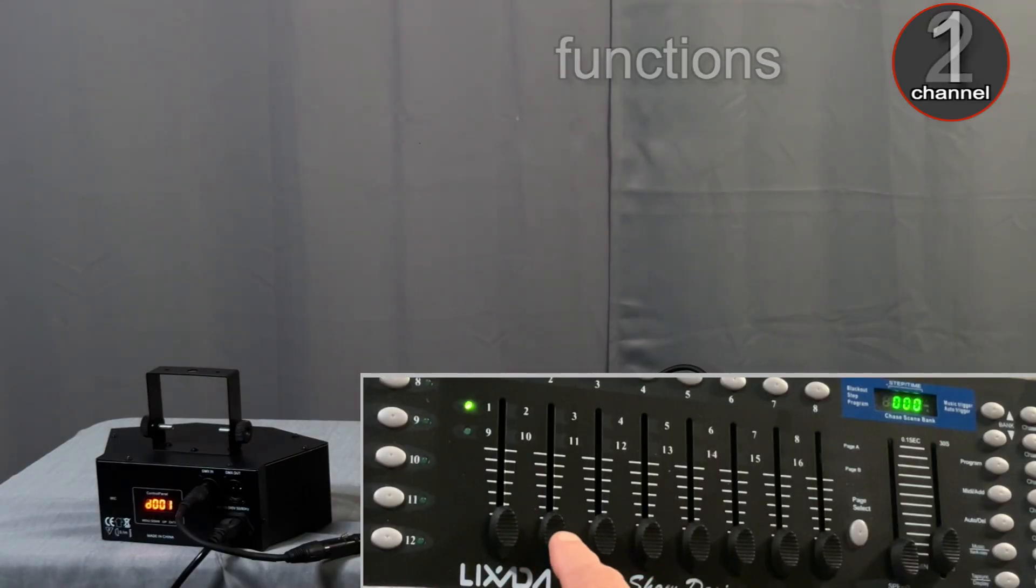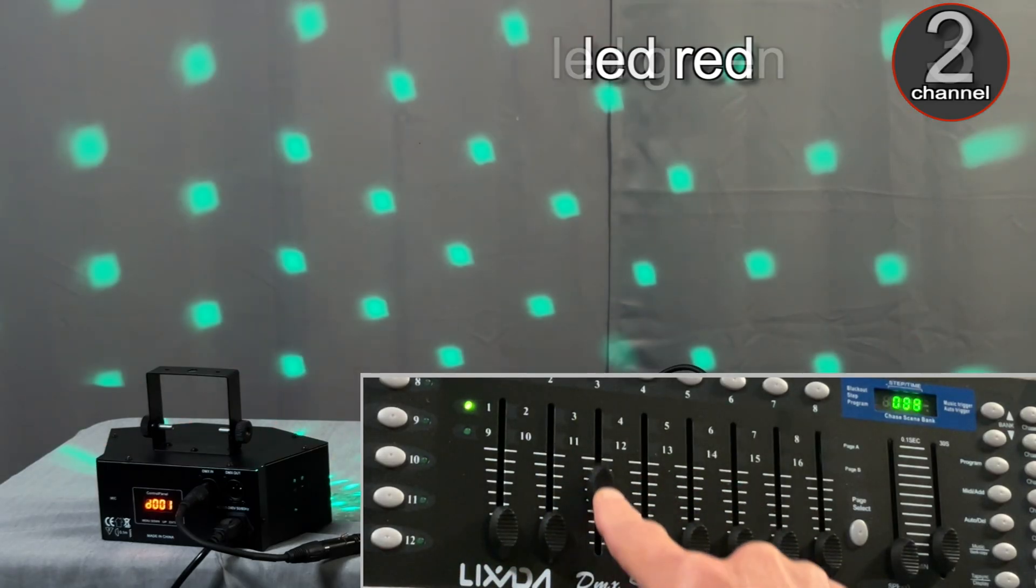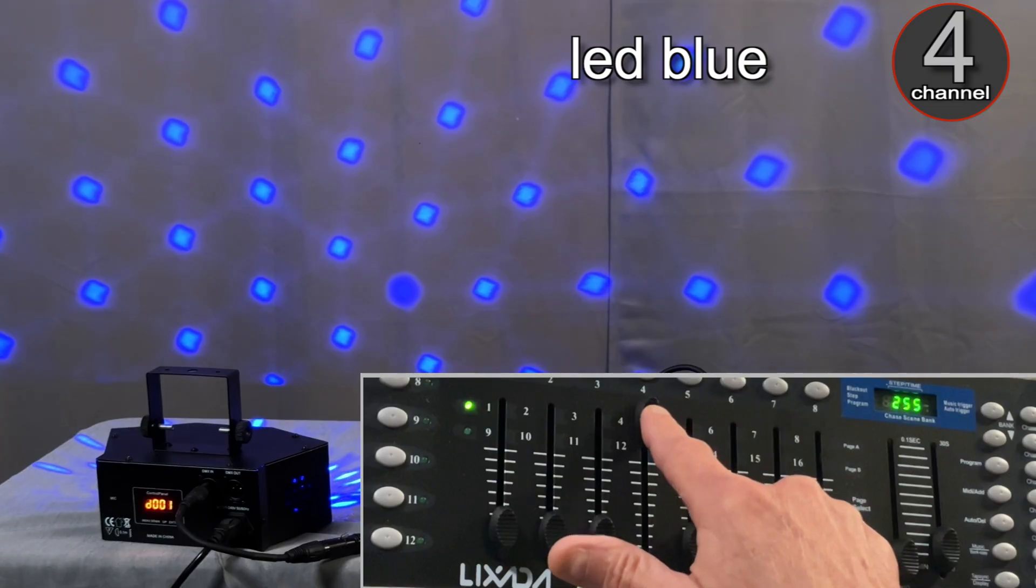On channel 2, it's a dimmer for the red LED. Dimmer for the green. Dimmer for the blue.